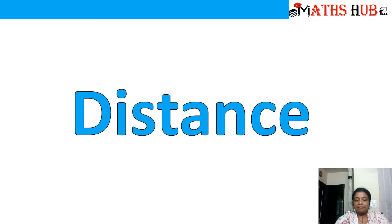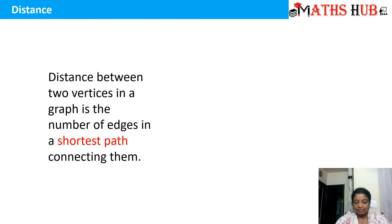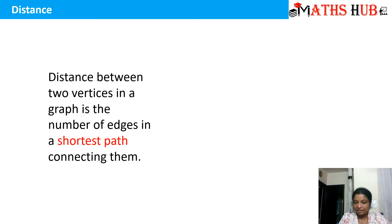To begin with, let's start with the first key term, that is distance. How is distance defined in a graph? We say that distance between any two vertices in a graph is the number of edges in the shortest path connecting them. That means to find the distance between any two vertices, you find all paths between those vertices, and the number of edges in the shortest path is referred to as the distance.